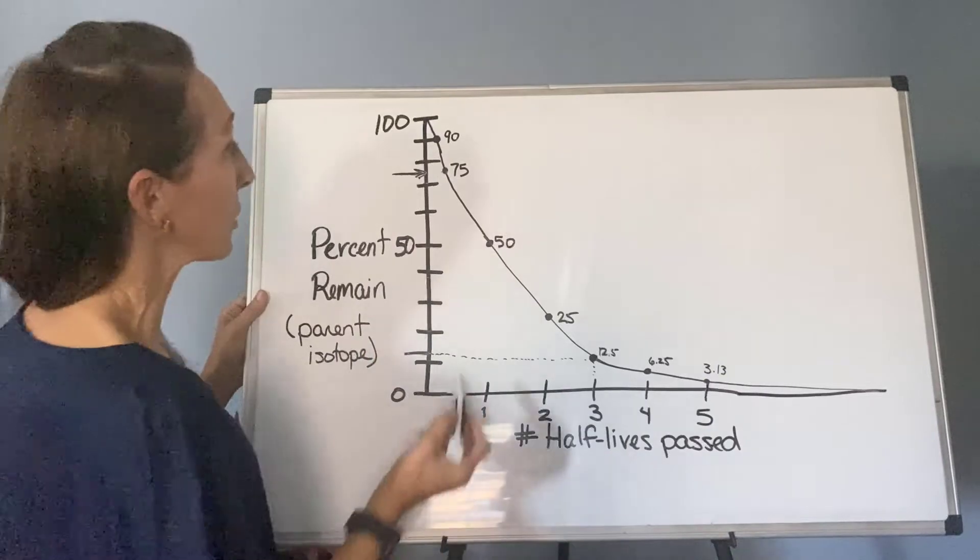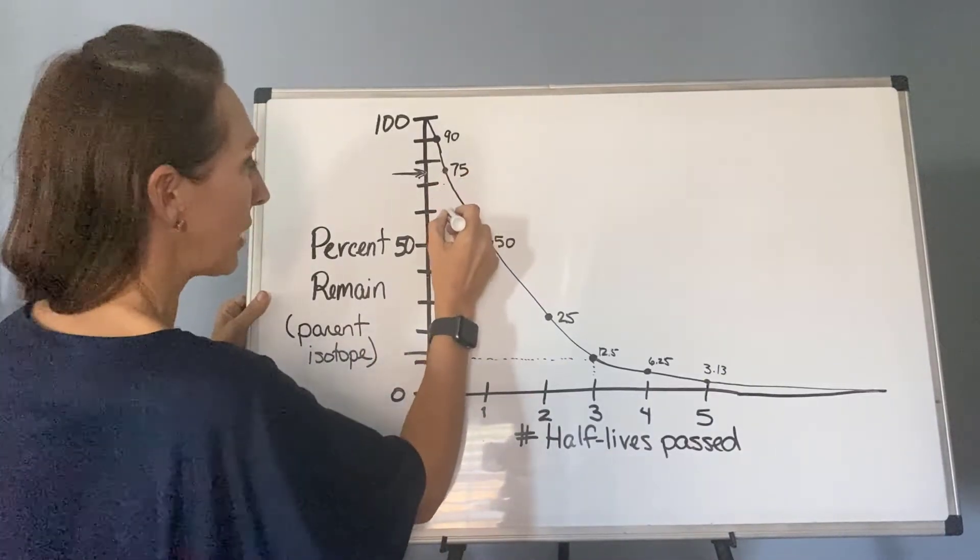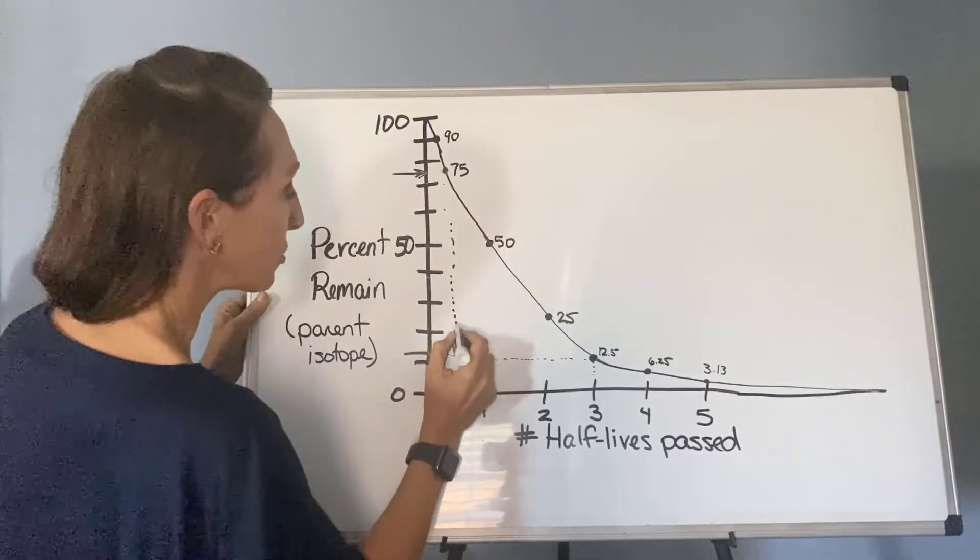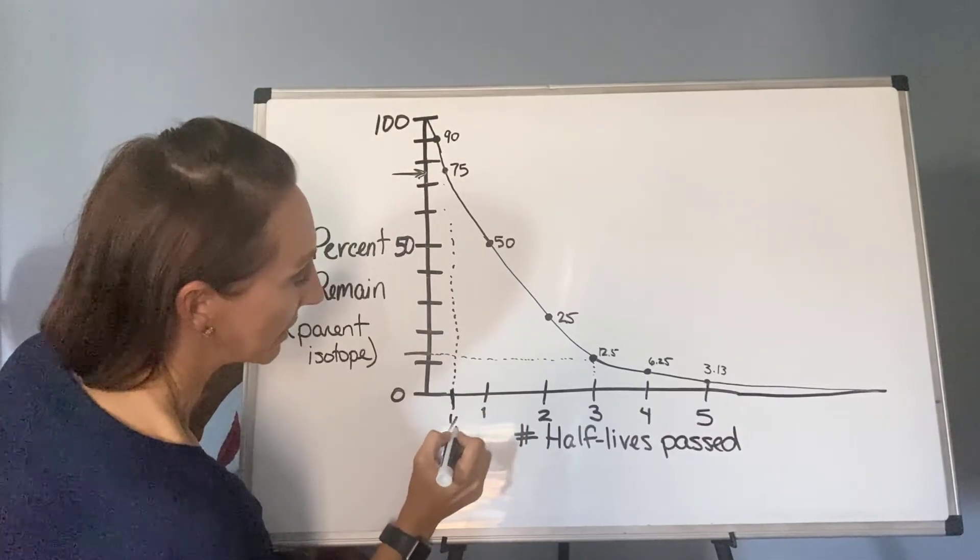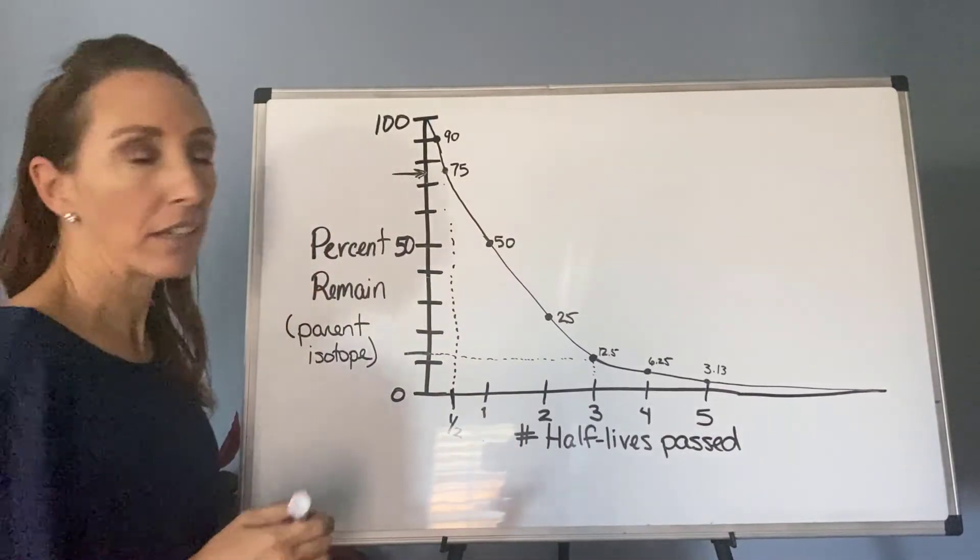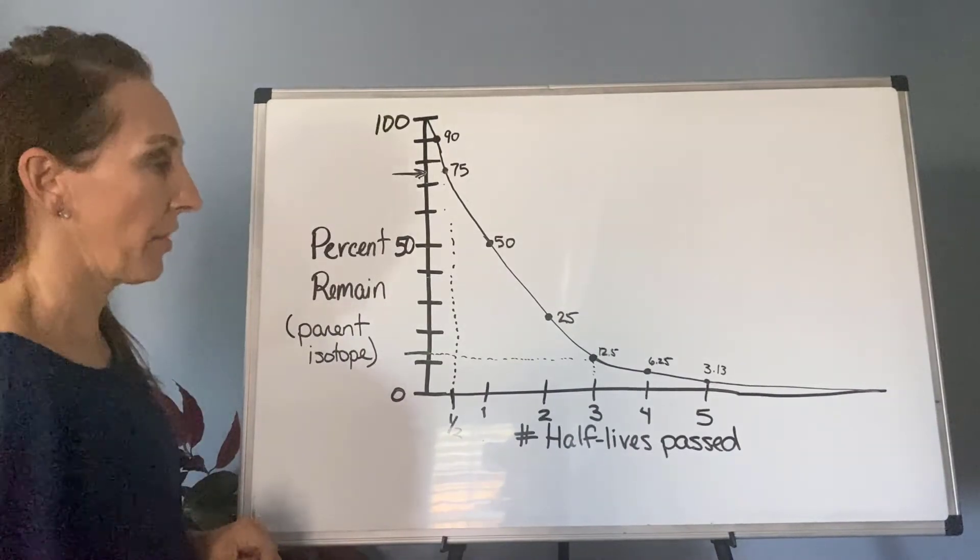And again, this just happens to be labeled. And then I would come down. And if you go on our actual graph in the lab manual, it ends up at the half mark right here, which is where that ends up roughly. So you would read that off.